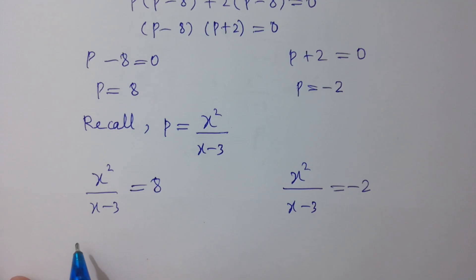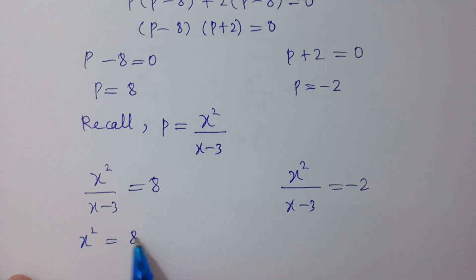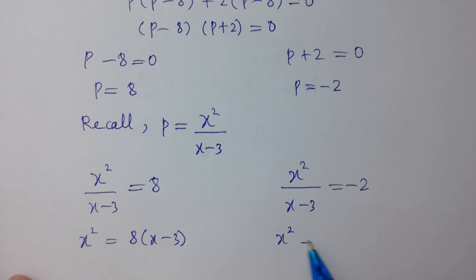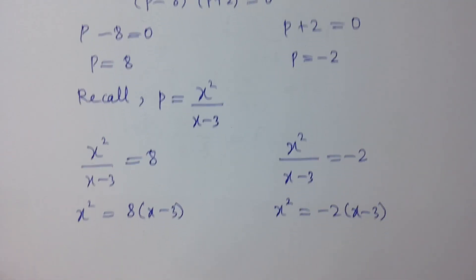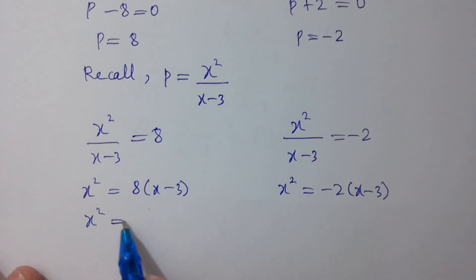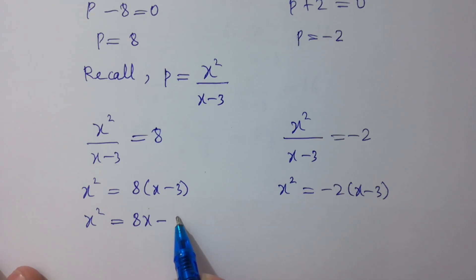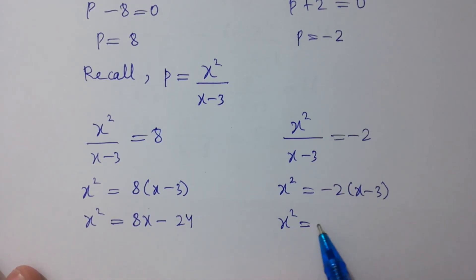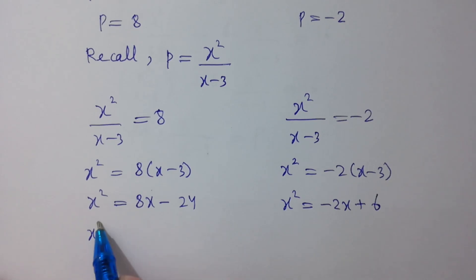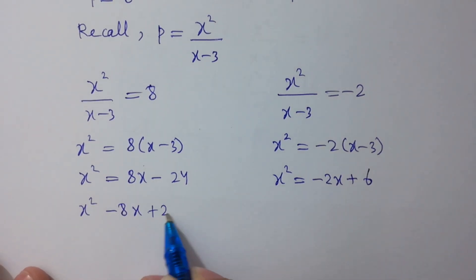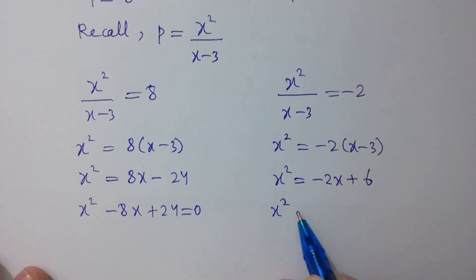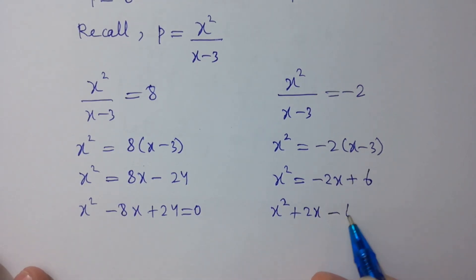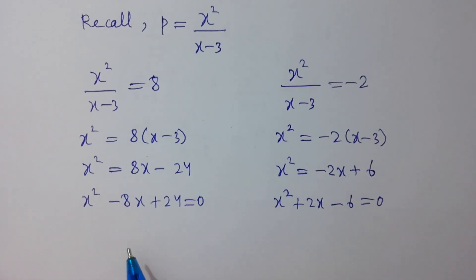Solving: x² equals 8(x-3) and x² equals -2(x-3). This gives x² equals 8x minus 24, and x² equals -2x plus 6. Rearranging: x² minus 8x plus 24 equals 0, and x² plus 2x minus 6 equals 0. Both are quadratic equations.